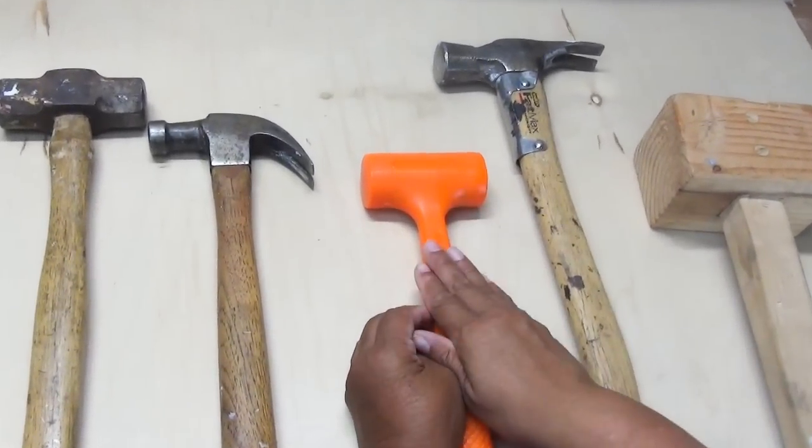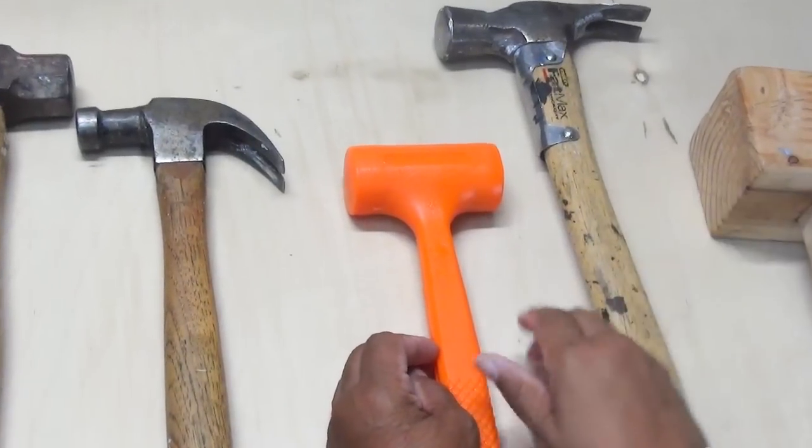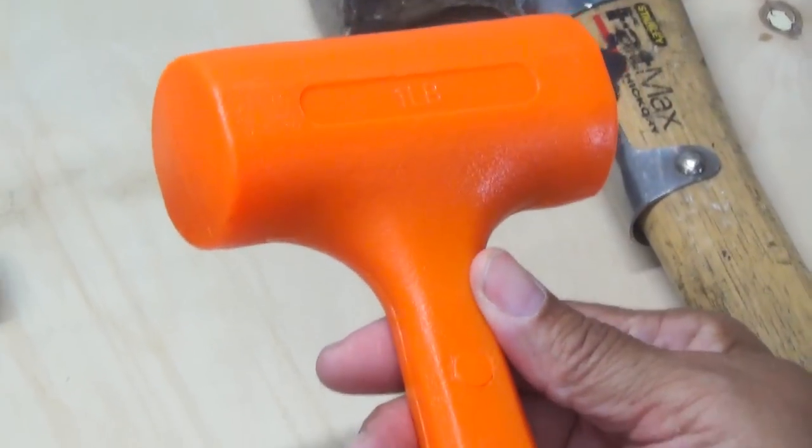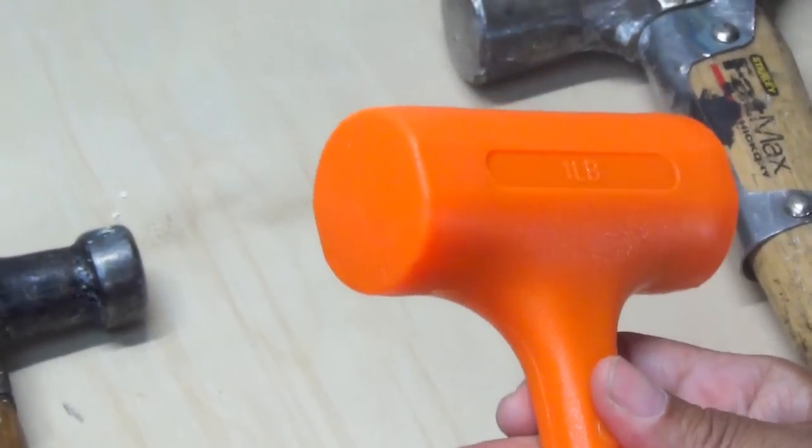Now the one that I skipped in the center is unlike any of the others. It's what they call a dead blow hammer, and when you strike a surface with it, it really delivers a dead blow.